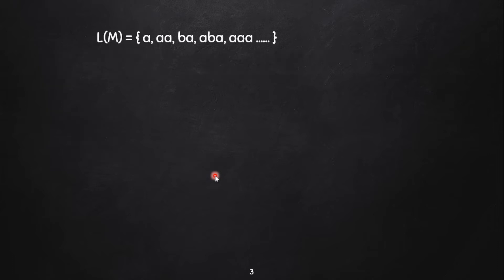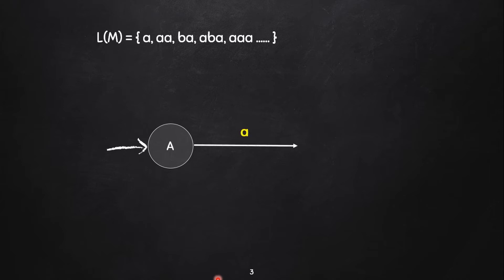To construct a DFA, we invoke a state. We define the initial state and make it a state. Where A state will be A, then A state will be B state.